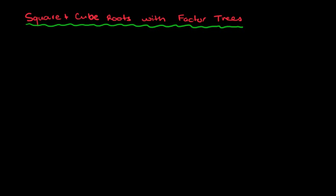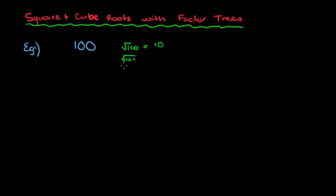So what we're going to be looking at — we'll start off with our first example, which is a very easy number: 100. Hopefully you already know that the square root of 100 equals 10. We get that from the fact that 10 squared equals 100, because 10 times 10 is 100. Remember, if we multiply a number by itself it means it's squared.